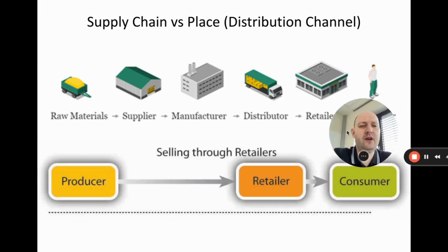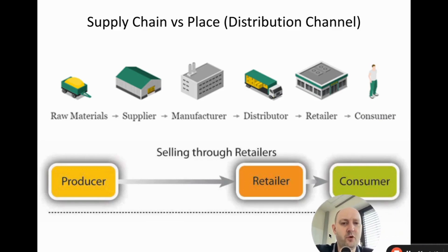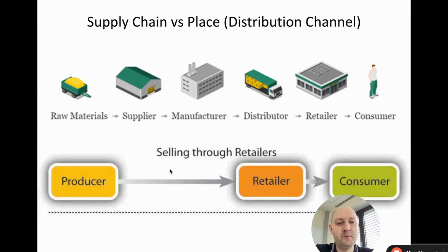A common question is: what's the difference between the supply chain and the distribution channel? The distribution channel comes under the 'place' part of the four P's, and they look very similar. The key distinction is that the supply chain focuses on minimizing cost and getting the product to the customer as quickly as possible, whereas the distribution channel focuses on maximizing sales and brand image. So while they overlap, they have different objectives.